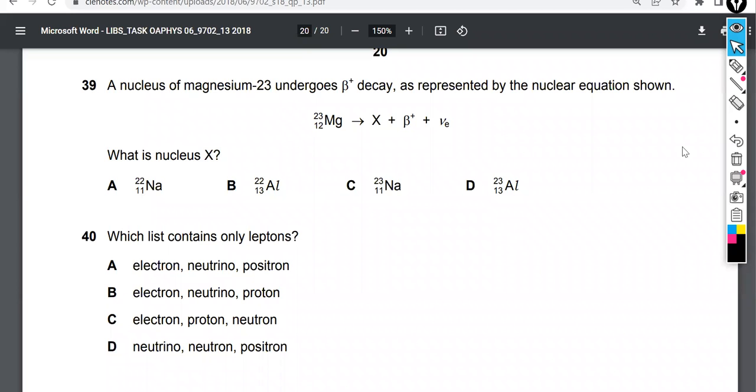Hello and welcome. In this worked example, or these worked examples, we're looking at two paper one questions belonging to the learning objectives we covered in radioactivity. The question reads: a nucleus of magnesium-23 undergoes beta plus decay as represented by the nuclear equation shown. What is nucleus X?